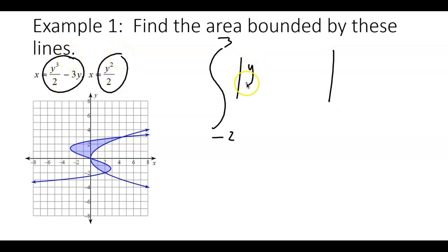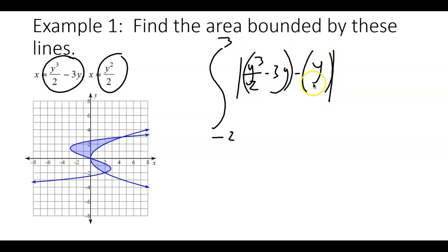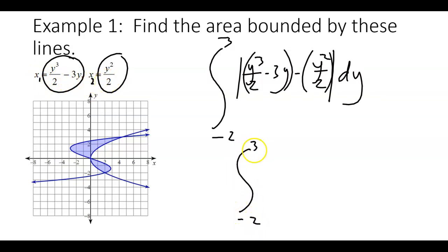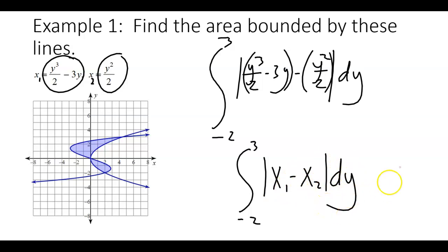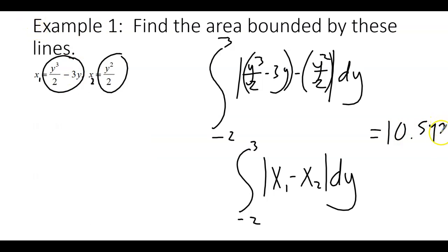Even though the graph I typed looked vertical, the real graph is sideways. What I actually did was integrate from −2 to 3 using the absolute value of the difference. You could write the full equations in the integral — for instance, the first function as x₁ and the second as x₂. The answer we got was approximately 10.54.